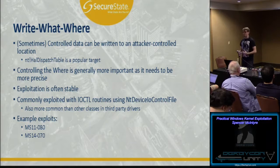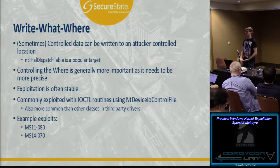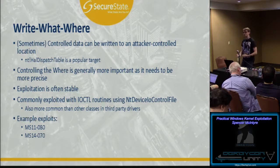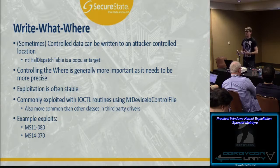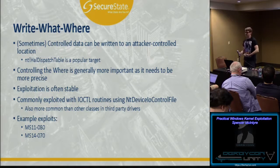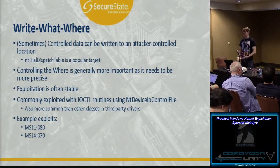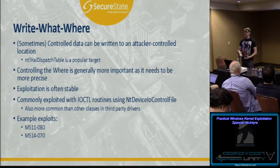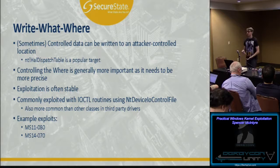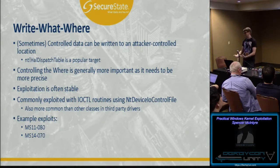Exploitation using write-what-where is often relatively stable. Usually when you have this condition, people end up targeting the HAL dispatch table. There's a special pointer in the HAL dispatch table at offset 4 on a 32-bit system that is a callback. If you can target that as your 'where' and set your 'what' data, you can trigger the code pointed to by that pointer on demand. Being that it can be done on demand is very key for reliability — you can execute it multiple times to elevate yourself and then clean up the system. It's also less likely to cause instability because the system calls that trigger it are not used as frequently as some others.